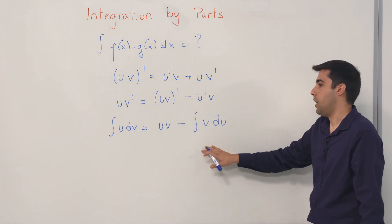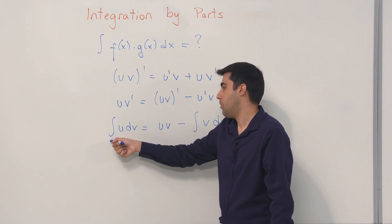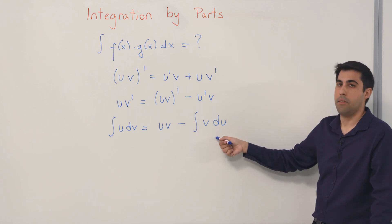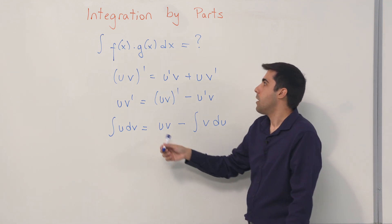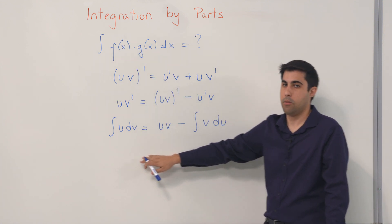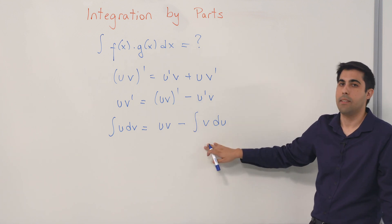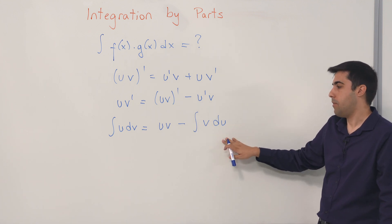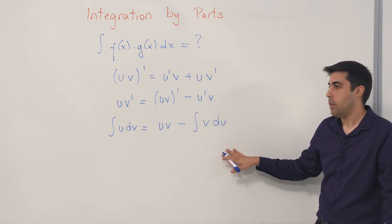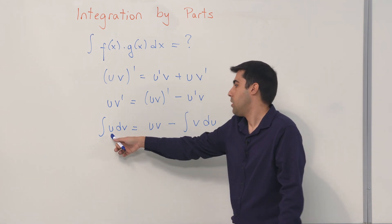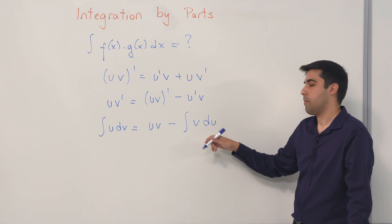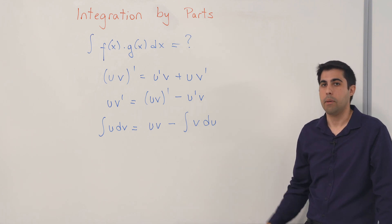With this formula, you have the integral of a product in terms of a product minus the integral of a different product. The problem of integrating a product reduces to integrating another product. This is feasible if the second integral is easier to solve. Now we will see how to choose u and v accordingly by solving some exercises.